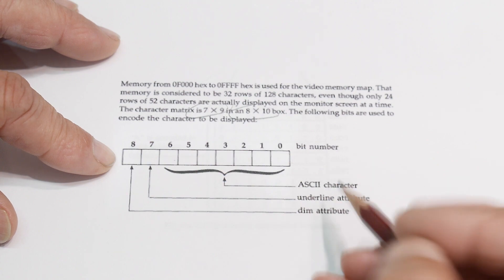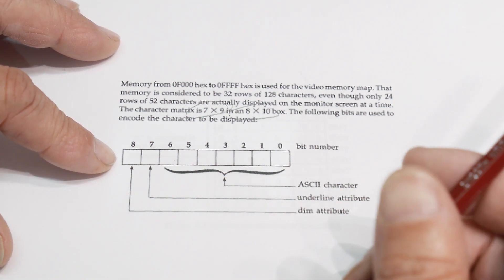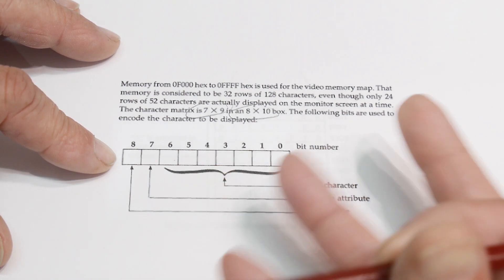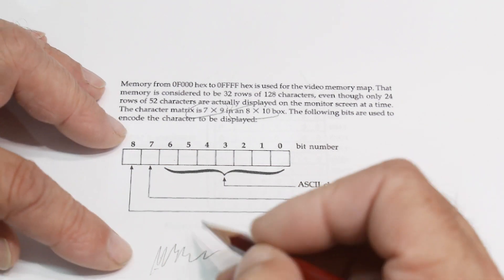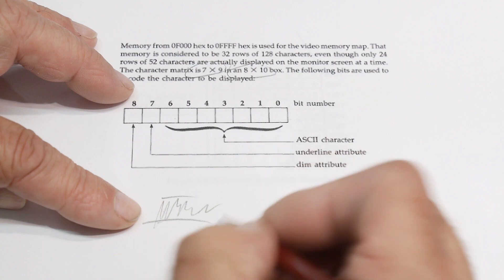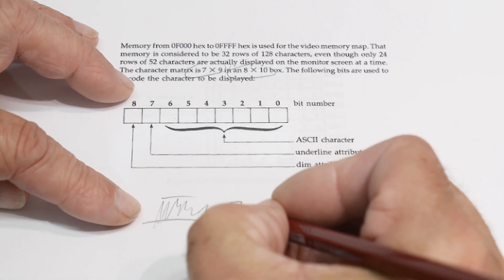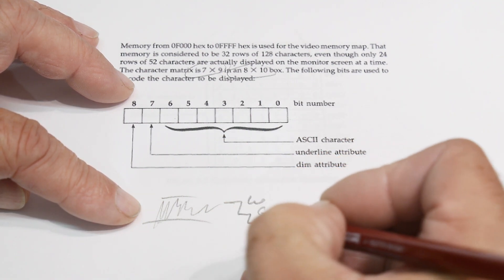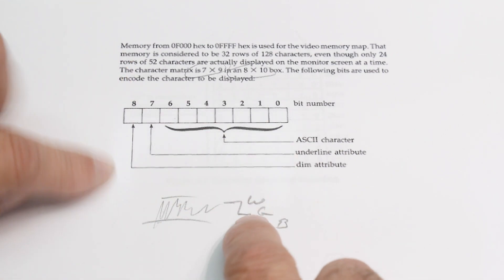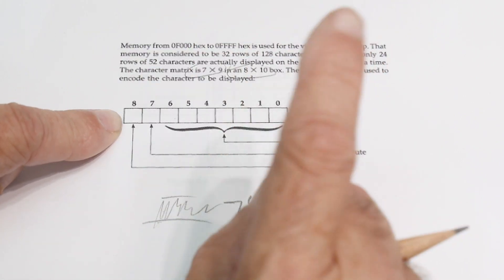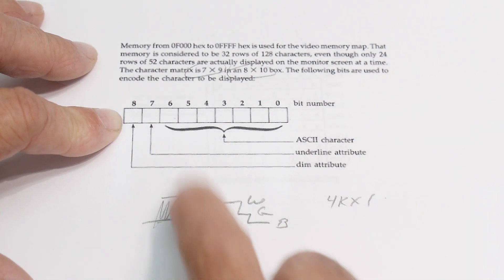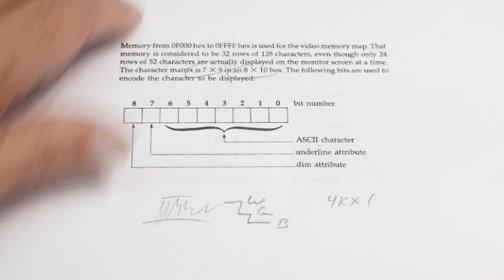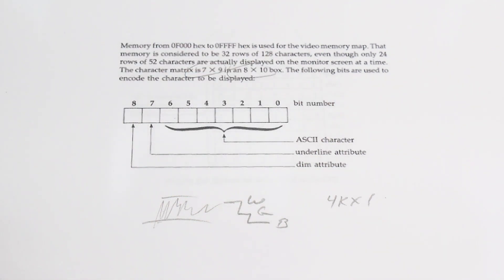There's a 9th bit used as a dim attribute, so you can have the display bright, off, or dim — three states. Video is an analog stream; at its maximum you get white, at the lowest you get black, and in between you get gray. That intermediate step is set by this bit. There has to be one extra memory chip — a 4K by 1-bit chip — just to handle the dim. I don't know what possessed them to add dim, but they did.